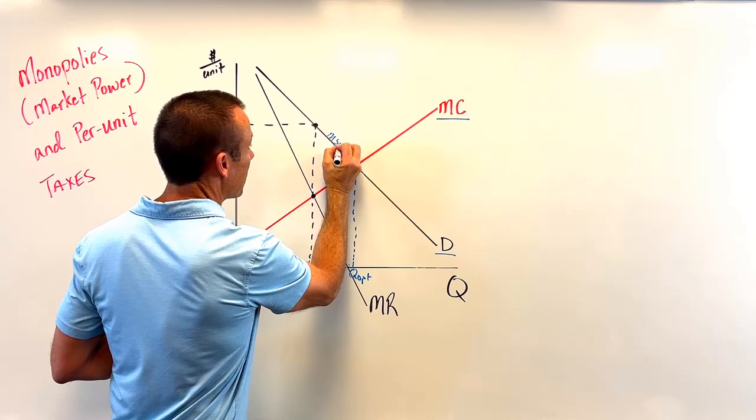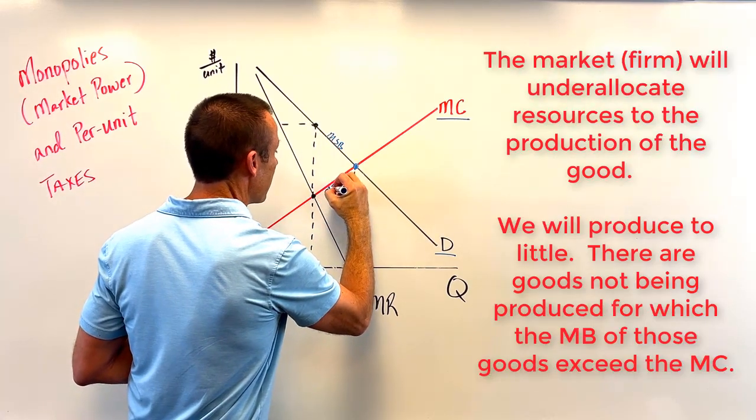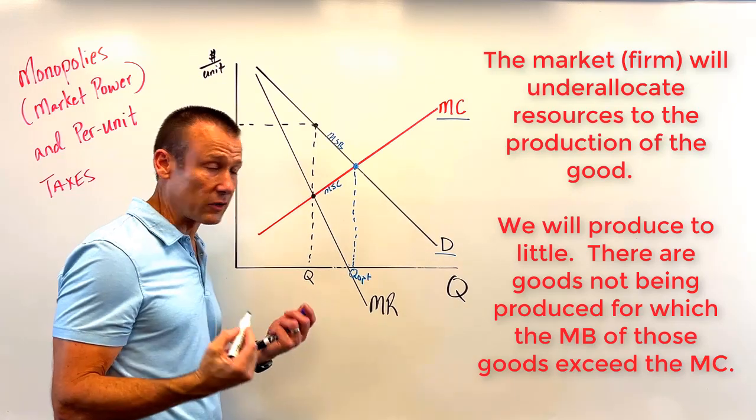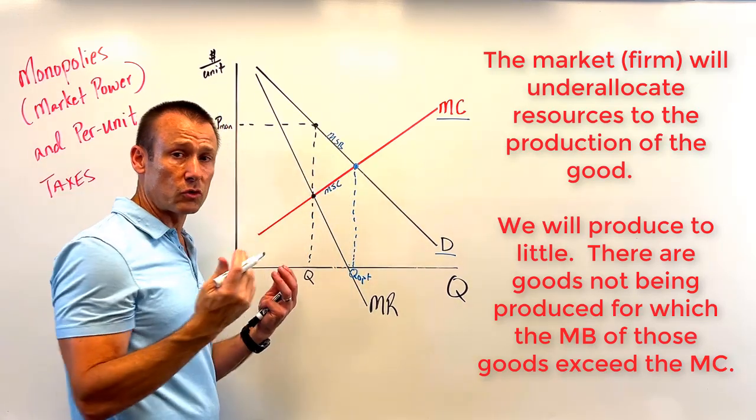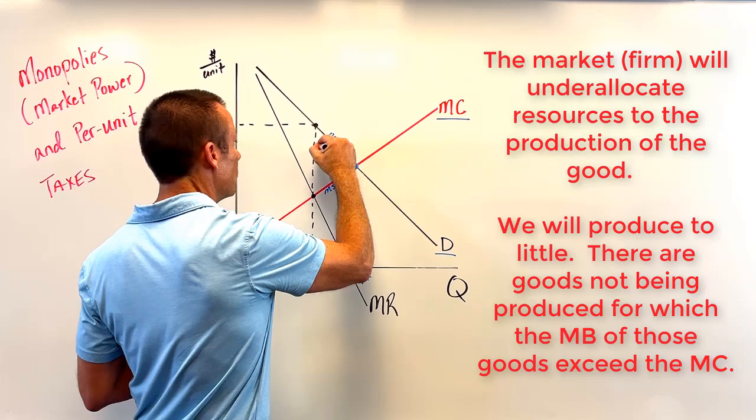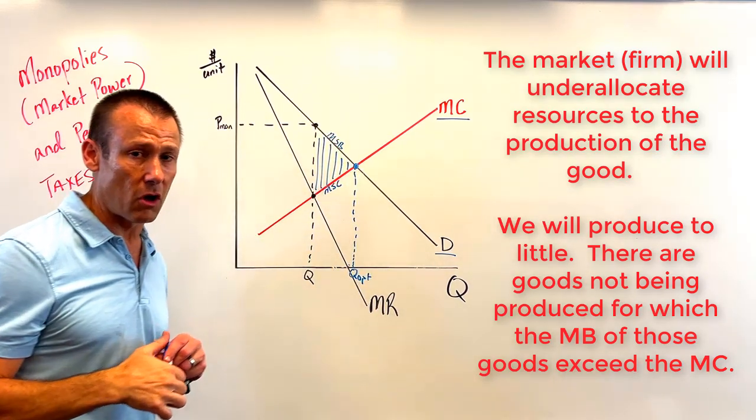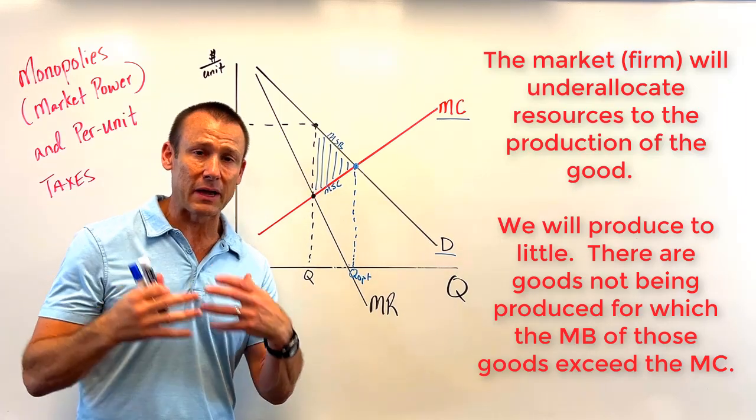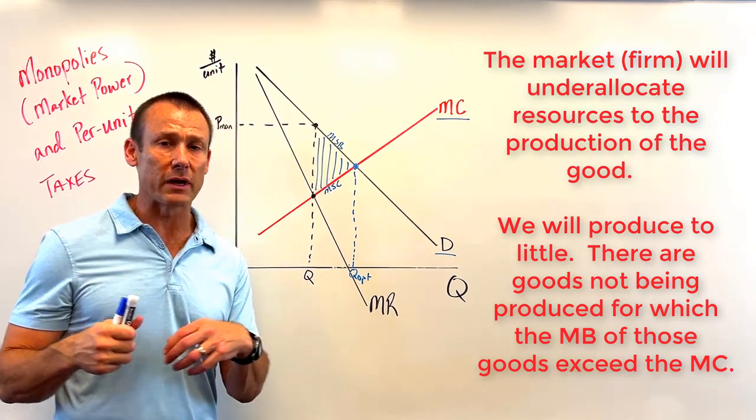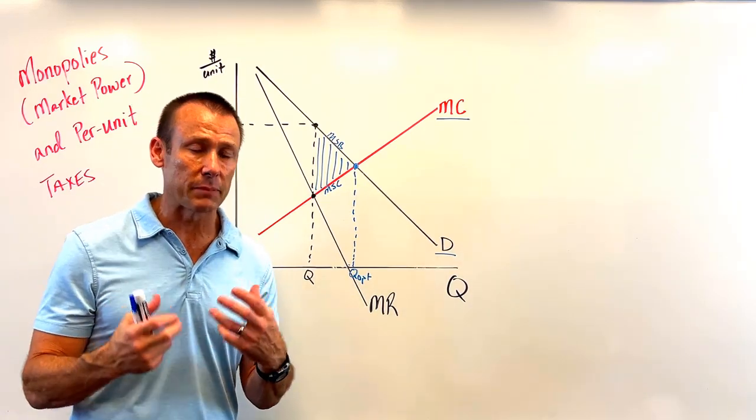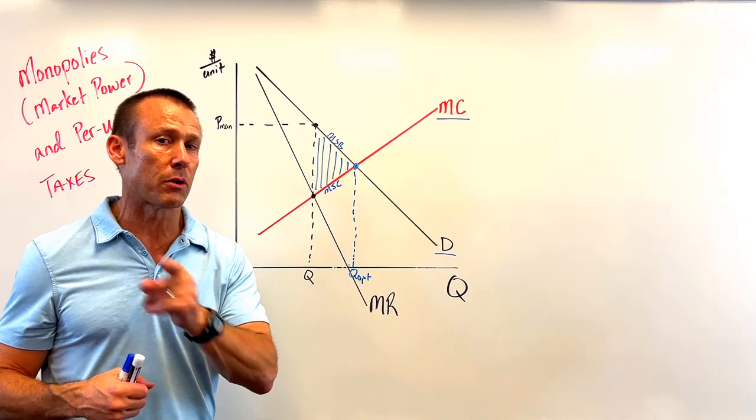Because again, this is the MSB, this is the MSC. So we've got all these goods that could be sold for which the marginal social benefit is greater than the marginal social cost. So this would be our deadweight loss. And so we've got this allocative inefficiency going on, and again, we've got this pricing power. Maybe we want to regulate this market power, this monopoly.